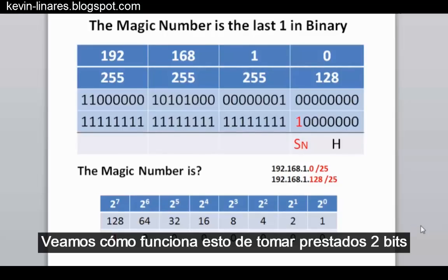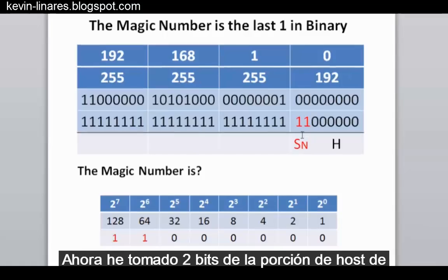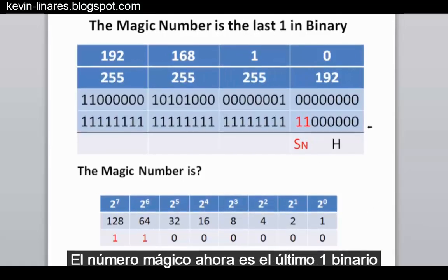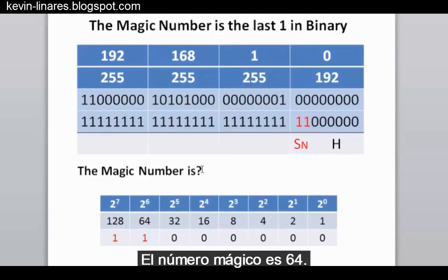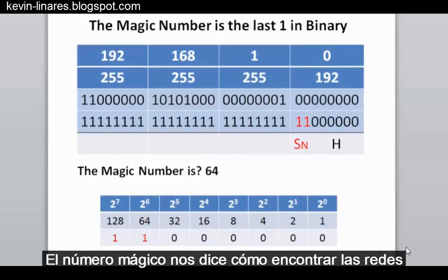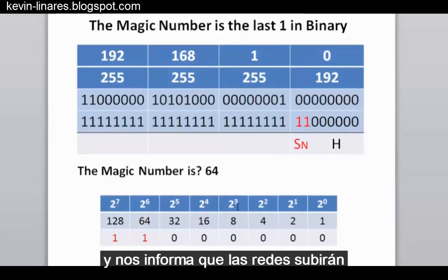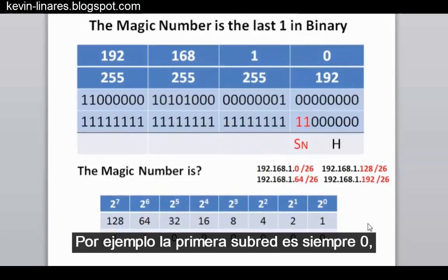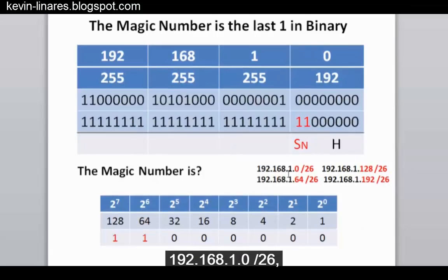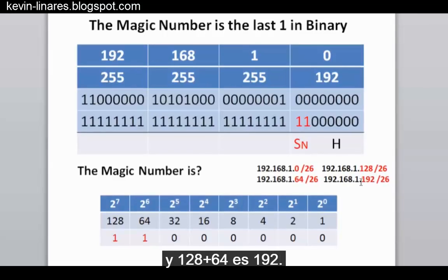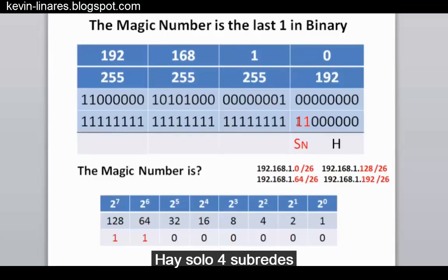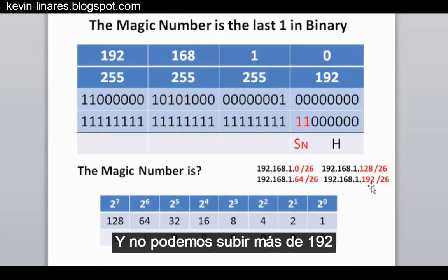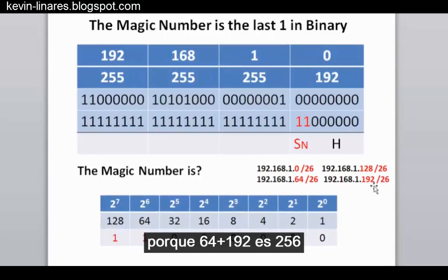Borrowing 2 bits from the host portion makes the magic number the last binary one, which is now in the 64s place. So the magic number is 64, meaning the networks will go up in increments of 64. The first subnet is 192.168.1.0 slash 26, then 64, then 128, then 192. There are only 4 subnets because we borrowed 2 subnet bits, and we can go no higher than 192, because 64 plus 192 is 256, which is too large.